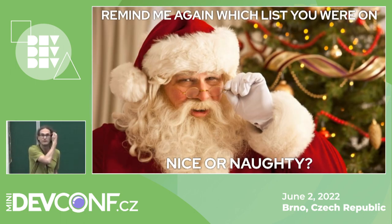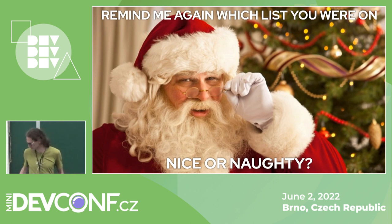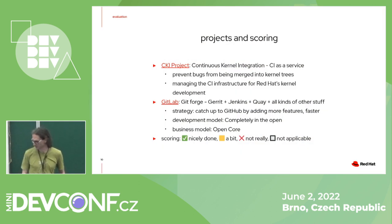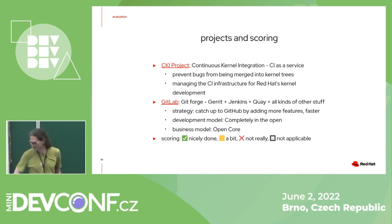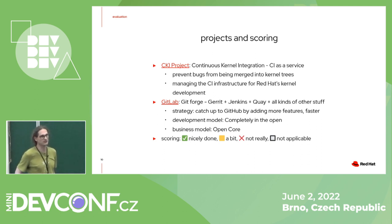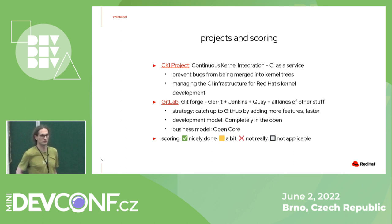We are going to take two services and try to figure out how they are doing. We'll look at two projects. One is the CKI project — the continuous integration as a service project for kernel developers — which Veronica talked about in the previous talk. It's an internal project aimed at internal developers, but there's an extended business reason: it tries to prevent bugs from getting into the upstream kernel first, because as a Red Hat team, we want to prevent those bugs from hitting the Red Hat kernel.